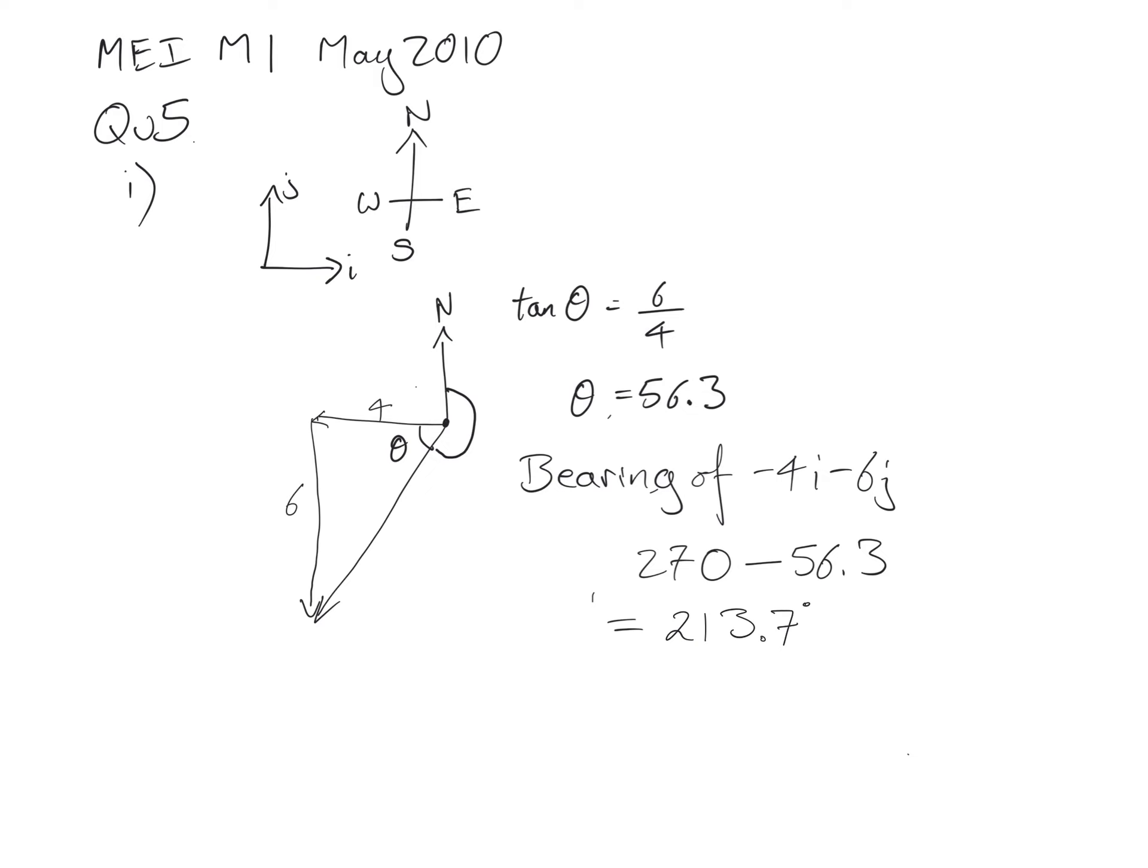However, I think your main issue is actually with part 2, so let's have a look at part 2. Part 2 says the vector minus 4i minus 6j plus k times 3i minus 2j is in the direction 7i minus 9j.